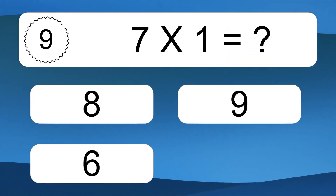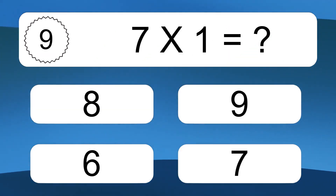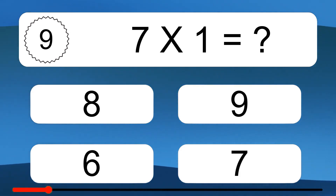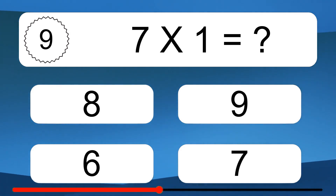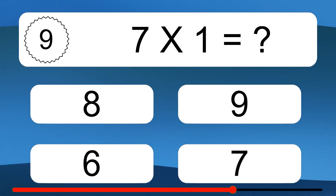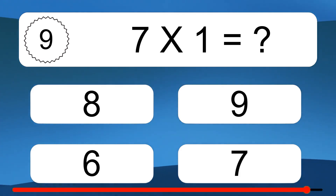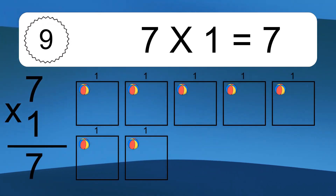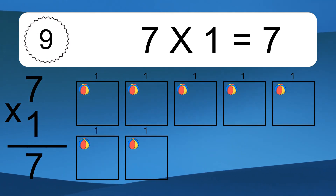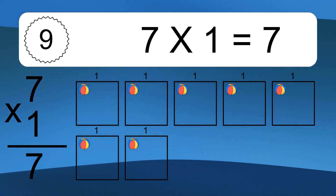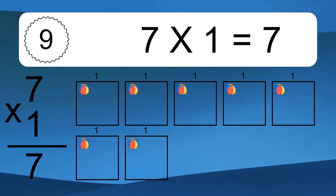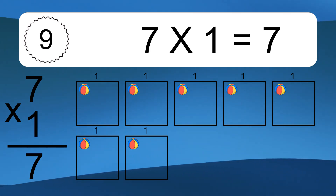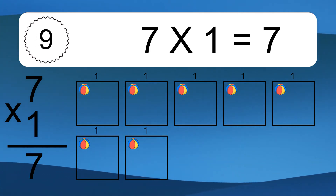Seven times one equals what? Seven times one equals seven. We have seven boxes, and each box has one colorful ball inside. If you count all the balls in all the boxes together, you will have seven times one balls. This equals seven balls.